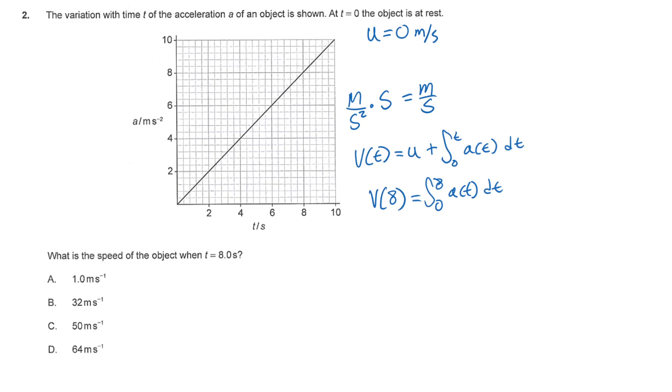Well, this here is just the area of the graph, and the area is relatively easy to find. We have the area of a triangle from 0 to 8. That will be 8 times 8 divided by 2, which is equal to 32 meters per second.